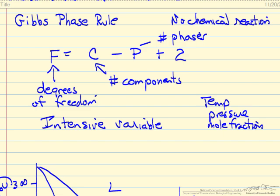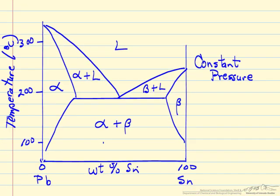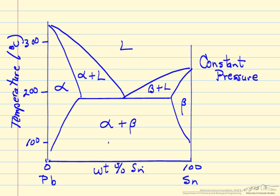So what we want to do is apply this to a phase diagram. In this case it's the case where we're looking at temperature on the y-axis and the weight percent of tin in a lead-tin system.